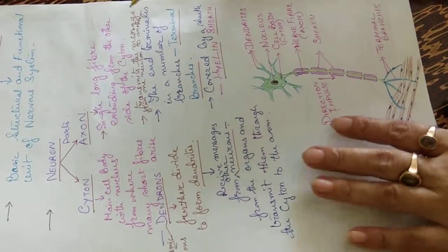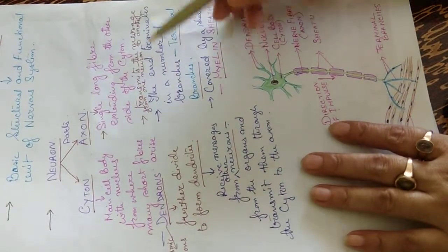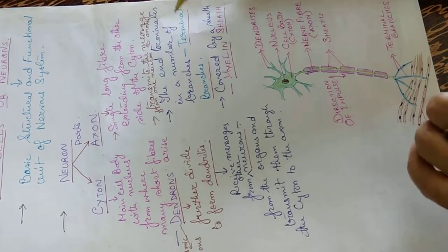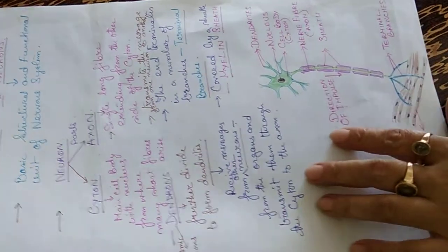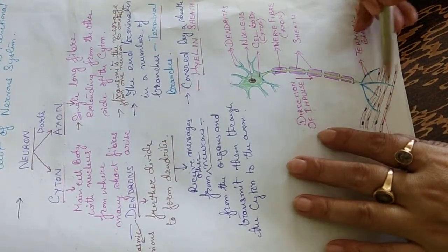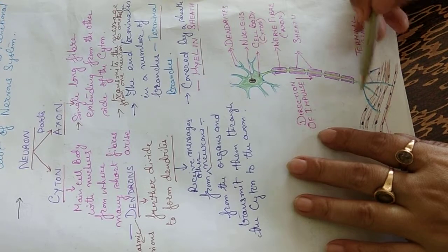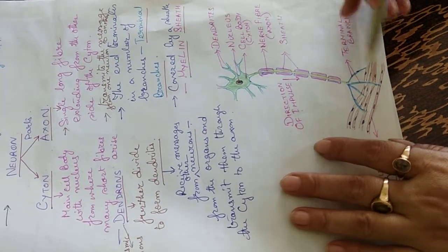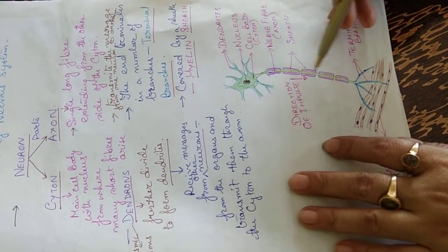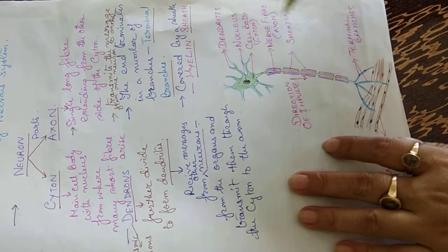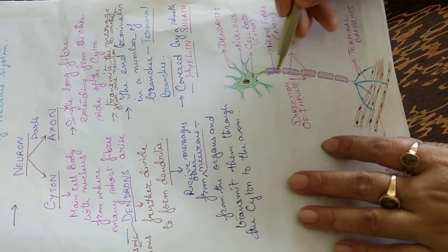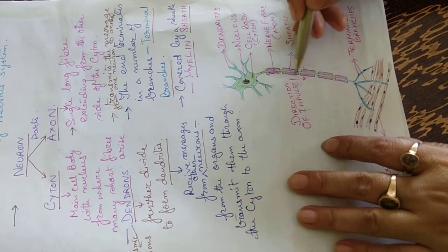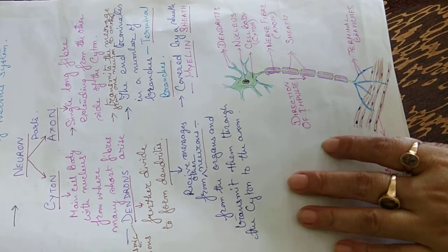The axon transmits the message from one neuron to another. The end of the axon terminates into a number of branches known as terminal branches. The axon is covered by a sheath called the myelin sheath.